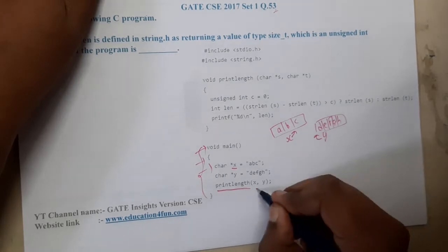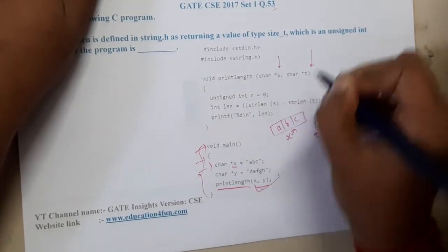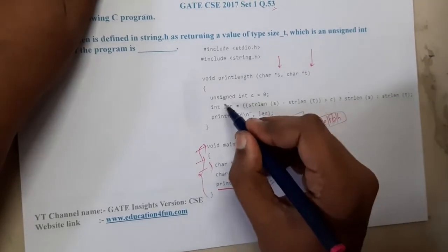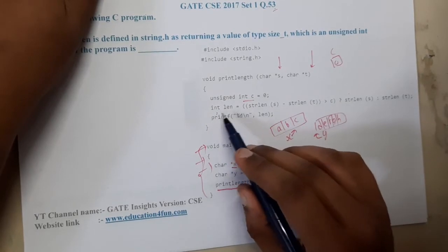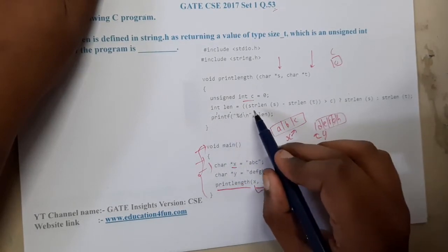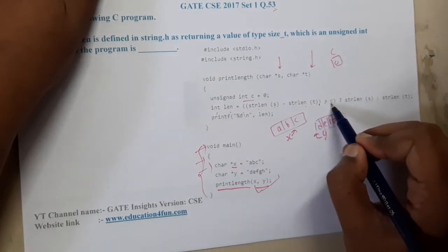So what is this x? This x will come here, this y will come here. Now you are creating an integer c. The value of c equals zero. Then you are checking int len equals strlen(s) minus strlen(t) is greater than or equal to c.